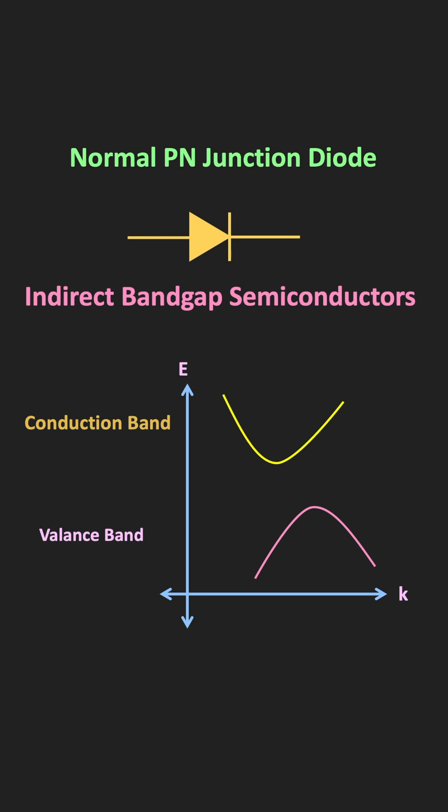Due to this lattice vibration, heat gets generated. So in simple terms, we can say that the electrons release the energy in the form of heat. And because of this, in the normal P-N junction diode, during the electron-hole recombination process, photons cannot get released.